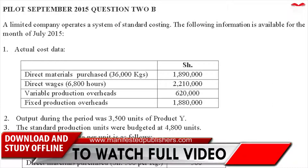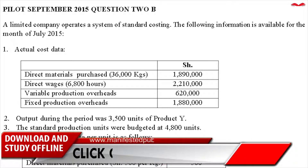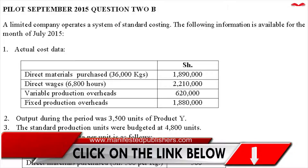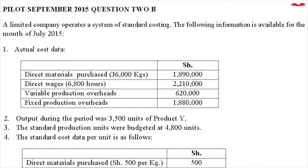The question reads that a limited company operates a system of standard costing. The following information is available for the month of July 2015. Number one, actual cost data: direct material purchased — 6,000 kgs, total 1,890,000 shillings.